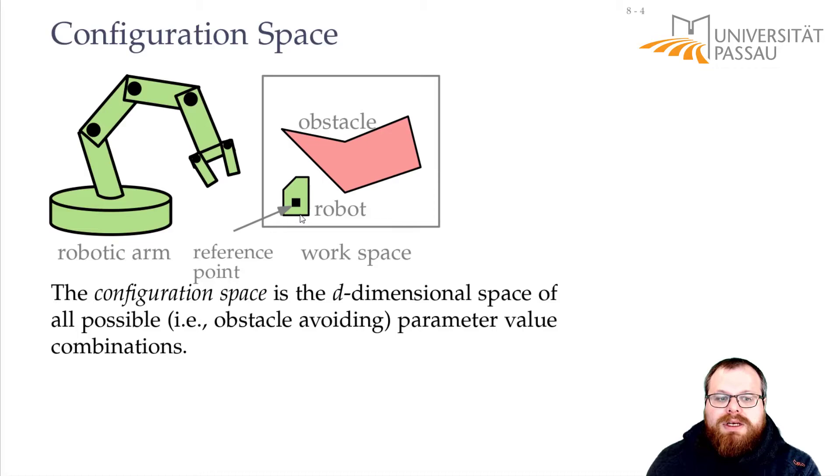And now, this will give us all the points in the plane where we can place the robot, or where we can place the reference point of the robot, such that we don't intersect the obstacles. And this is exactly the configuration space.